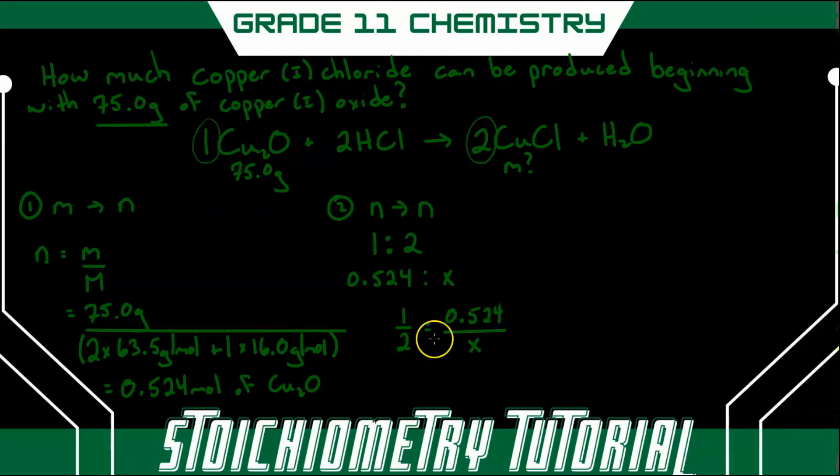And we have to rearrange this to solve for x. So you can cross multiply, like so. And we'll get x equal to two times 0.524. And that's moles. And we get 1.05 moles. And that'll be the number of moles of copper chloride.